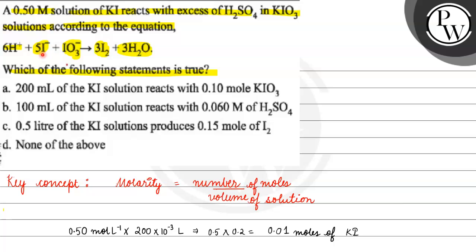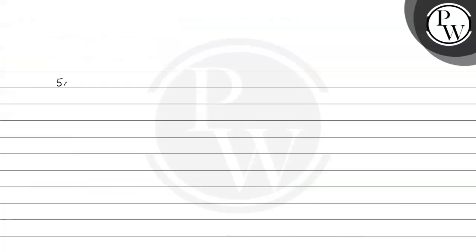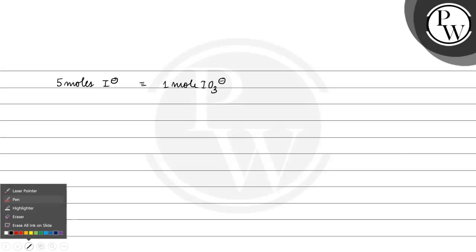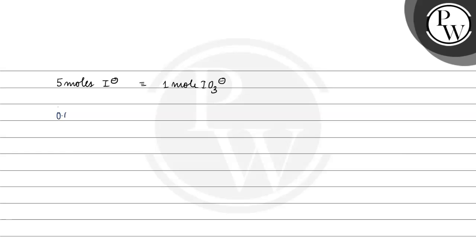Looking at the equation, 5 moles of I⁻ react with 1 mole of IO3⁻. So if we have 0.01 moles of KI (i.e., 0.01 moles of I⁻), then the moles of IO3⁻ needed would be 1/5 × 0.01 = 0.002 mol — not 0.1 mol as stated. So Option A is not correct.